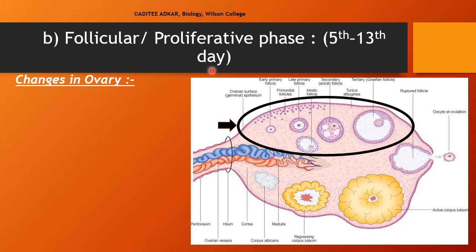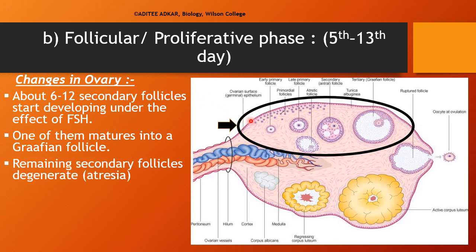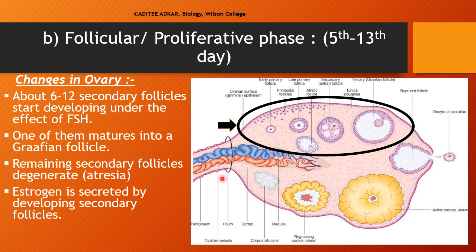The second phase of the menstrual cycle is the follicular or proliferative phase, beginning from day 5 and continuing up to day 13. In the ovary, about 6 to 12 secondary follicles start developing under the effect of FSH. However, only one secondary follicle develops into the mature Graafian follicle; the remaining follicles undergo atresia, meaning they are degenerated. As the follicles develop, they release the female hormone estrogen.